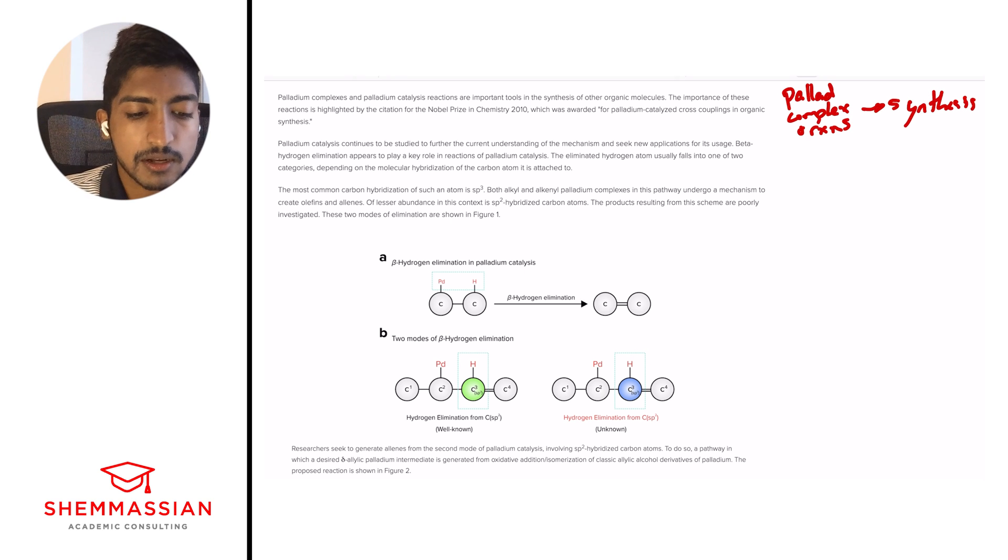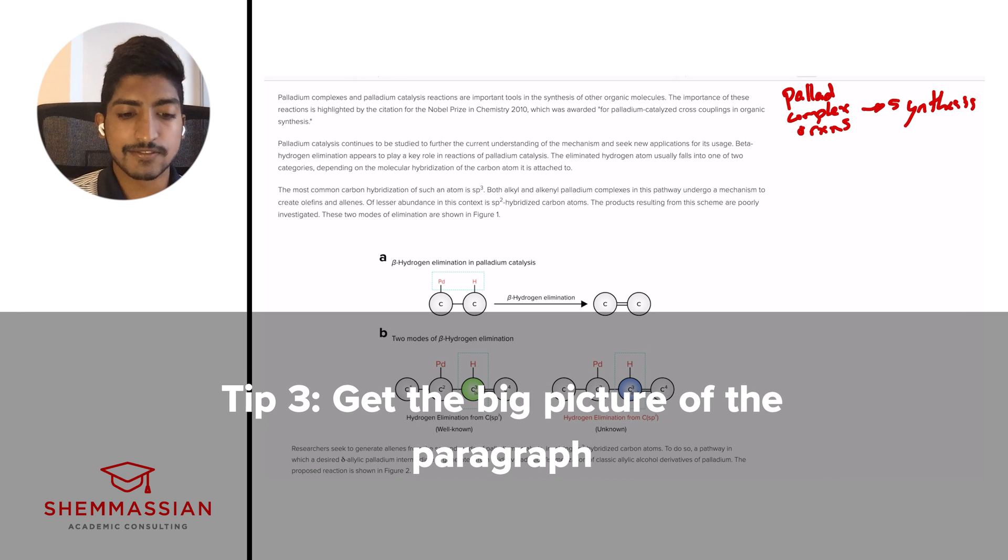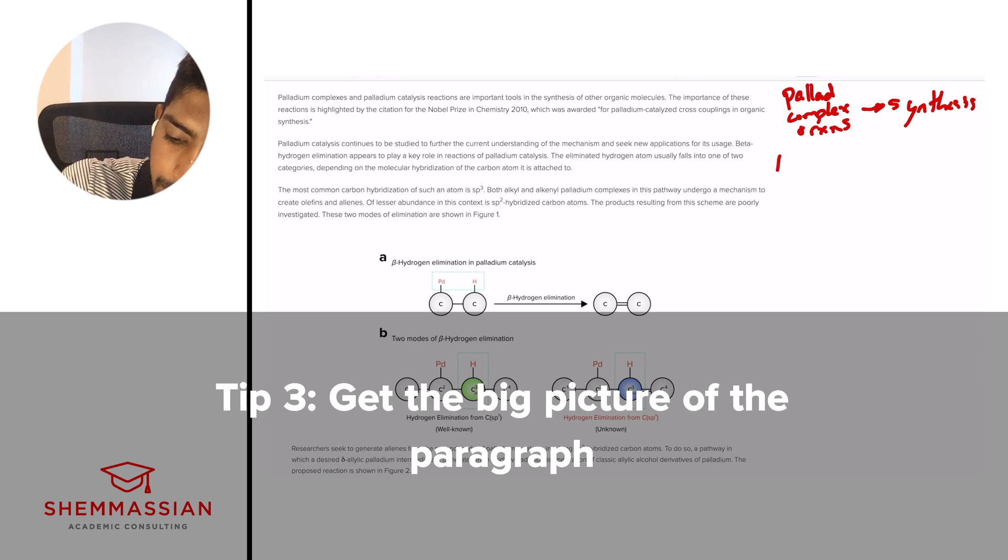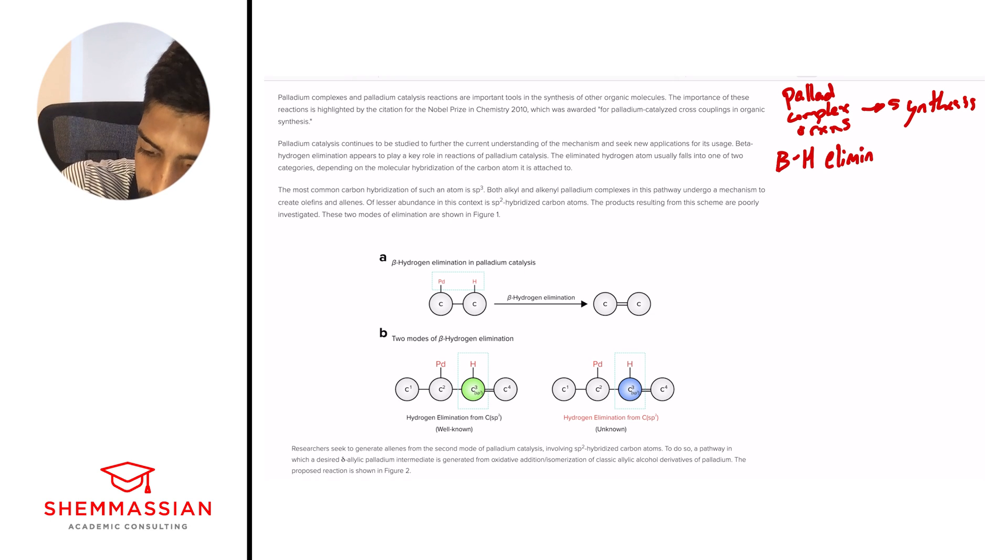Great. And so let's go on to the next paragraph. Palladium catalysis continues to be studied to further the current understanding of the mechanism and seek new applications for its usage. Beta-hydrogen elimination appears to play a key role in reactions of palladium catalysis. The eliminated hydrogen atom usually falls into one or two categories, depending on the molecular hybridization of the carbon atom it is attached to. Great. And so I don't like to focus too much on details. I want to get the big picture, the thesis of each of these paragraphs, right? And so here it's talking about a beta-hydrogen elimination to palladium catalysis, right? Abbreviations, arrows, perfect.